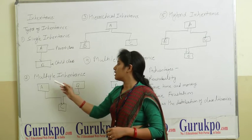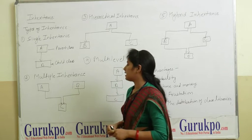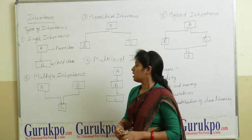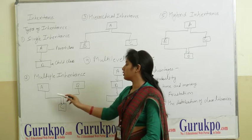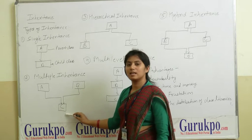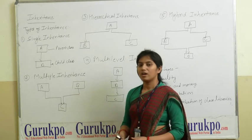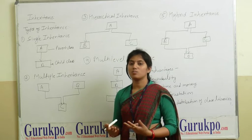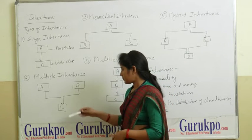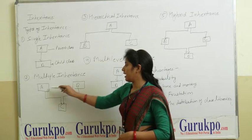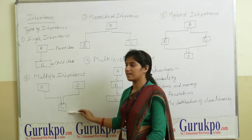The second type is multiple inheritance. In multiple inheritance, A and B are both classes, and both classes are inherited by class C. That means one class acquires the object properties, values, and data members of two classes. Here A and B are the parent classes and C is the child class.